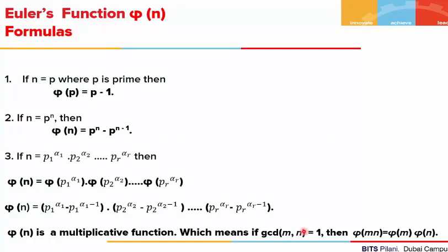Does that mean every time we are asked to find the phi value, we are supposed to write the reduced residue system and then count the number of elements? Not necessarily. We have some wonderful formulas to do so. These are 3 in number and they depend on the type of number we have — n can be prime, a prime power, or a product of prime powers.